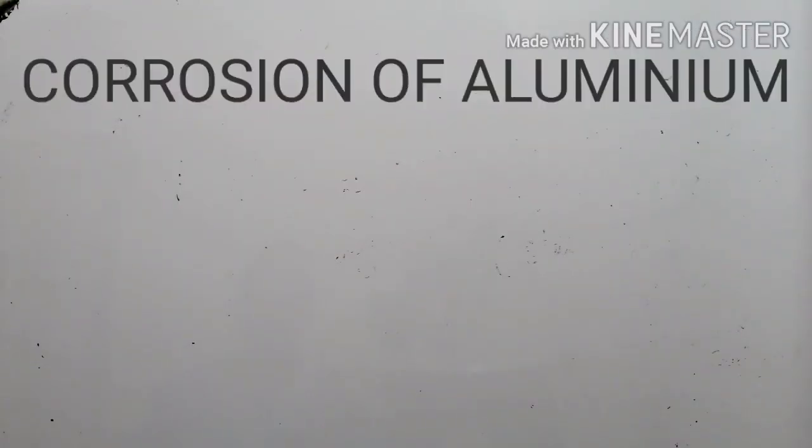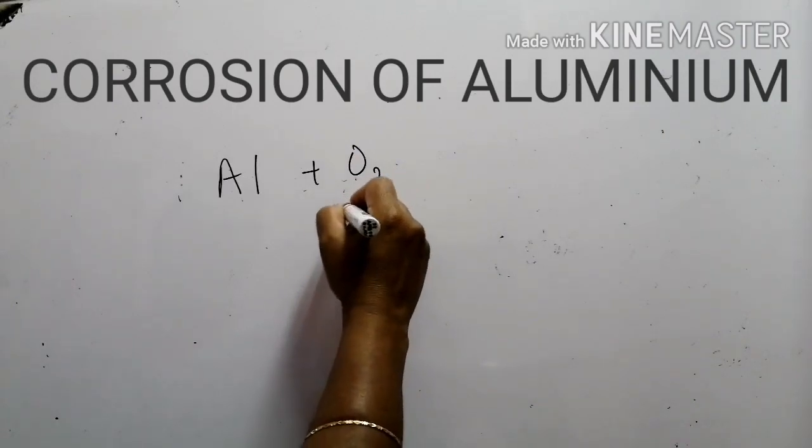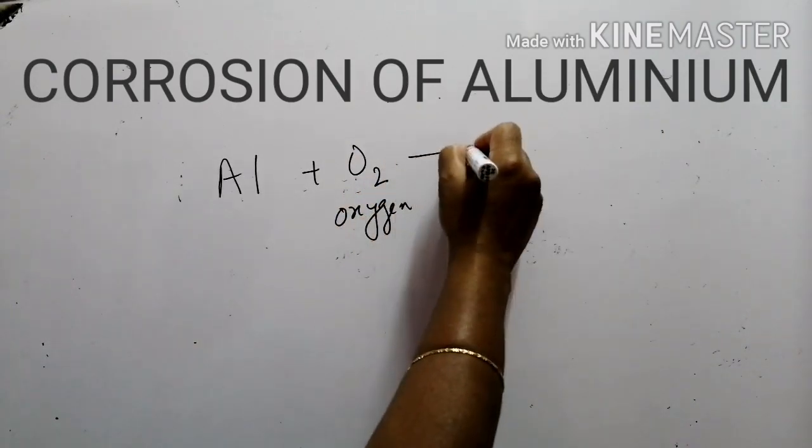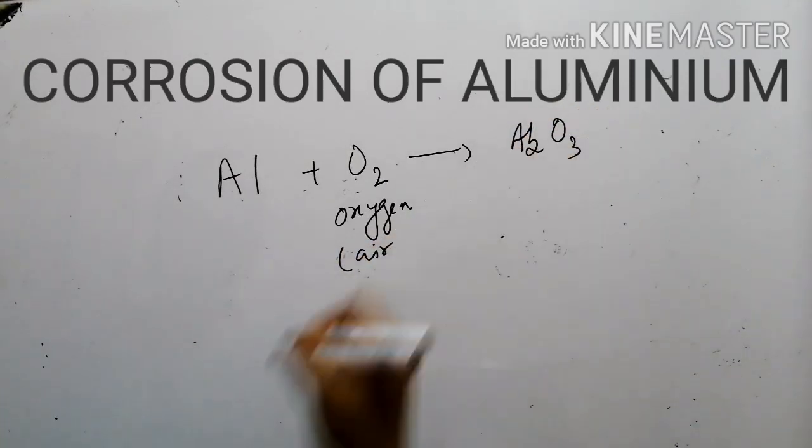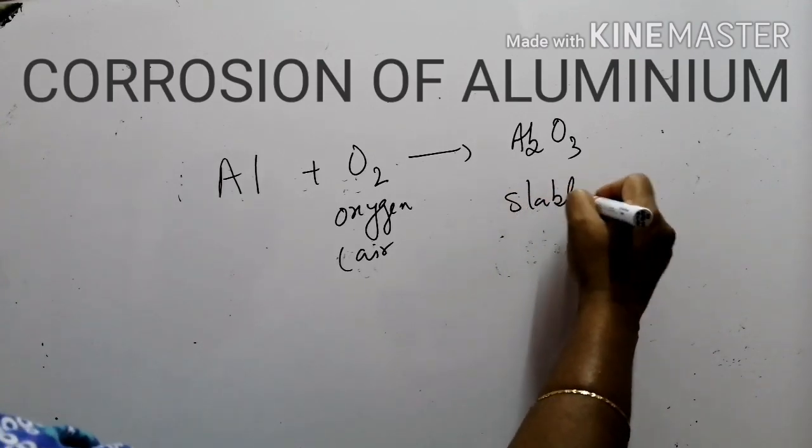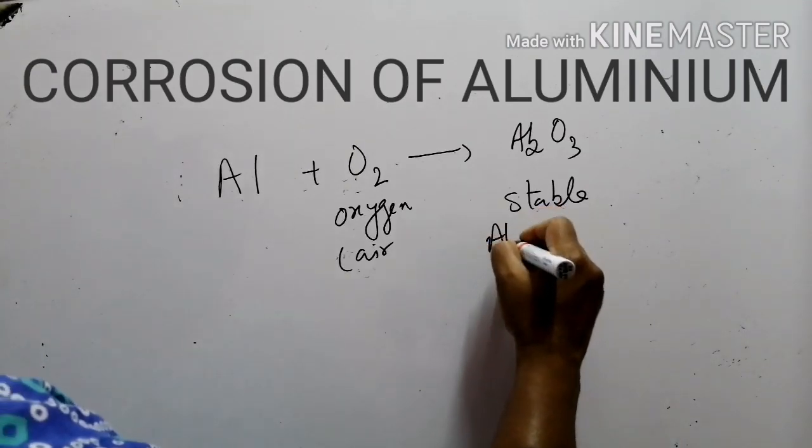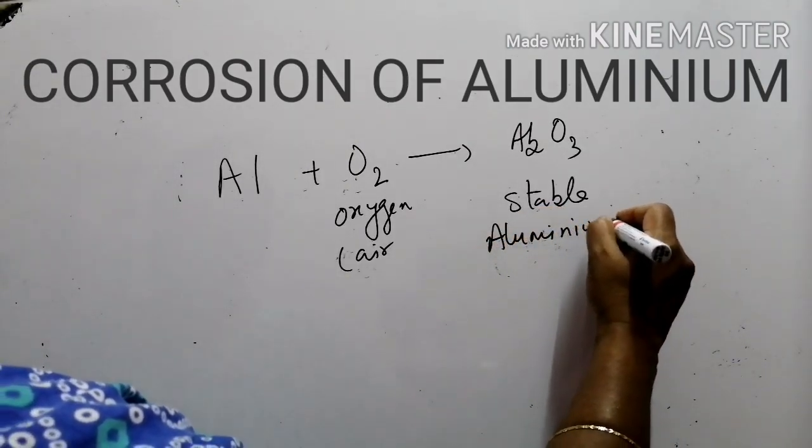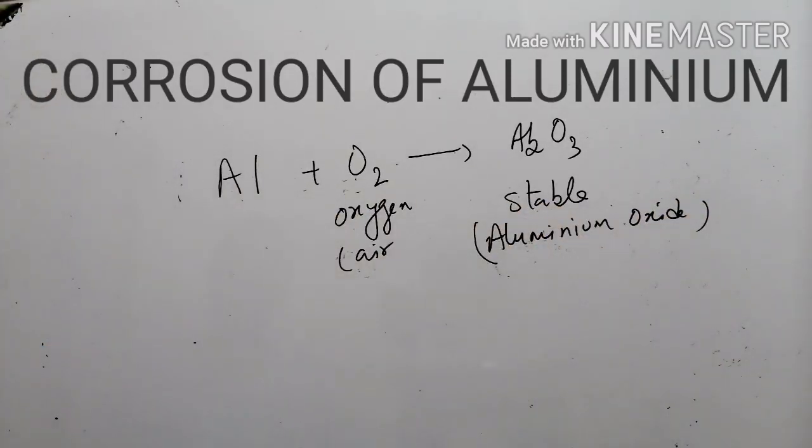Next is corrosion of aluminum. When aluminum metal comes in contact with atmospheric oxygen, it get corroded to form aluminum oxide. The aluminum oxide layer thus forms highly stable oxide layer. Due to this highly stable oxide layer, it prevents further reaction of aluminum. And hence, aluminum is always useful for us.